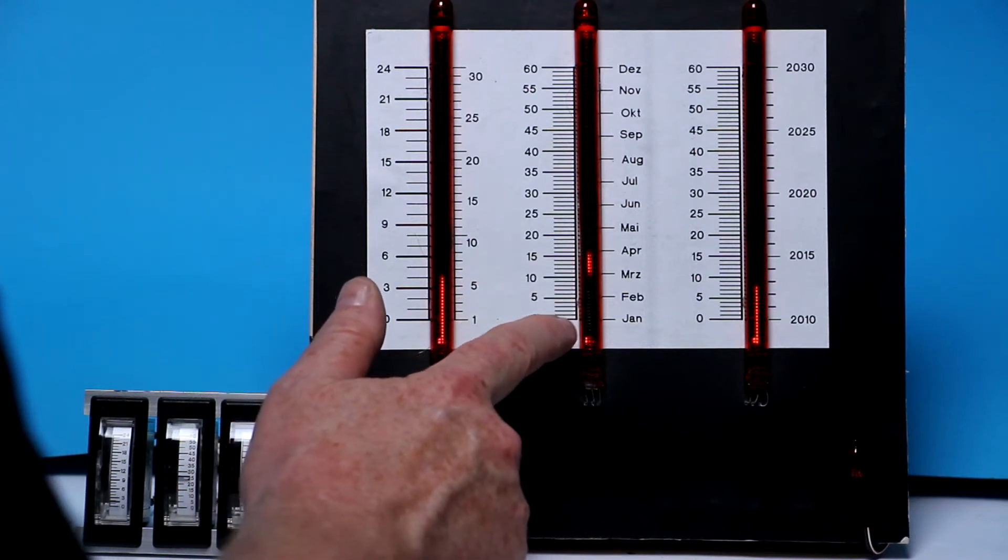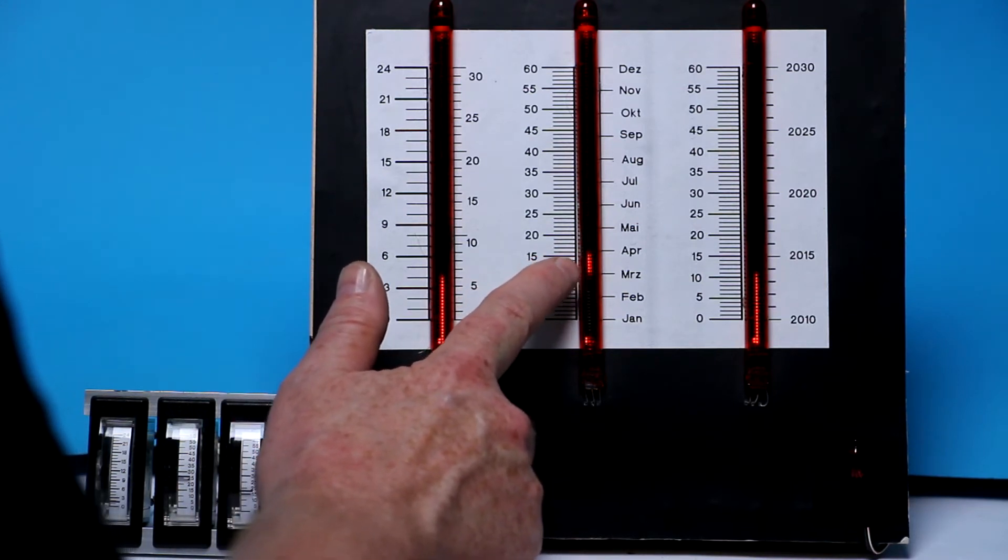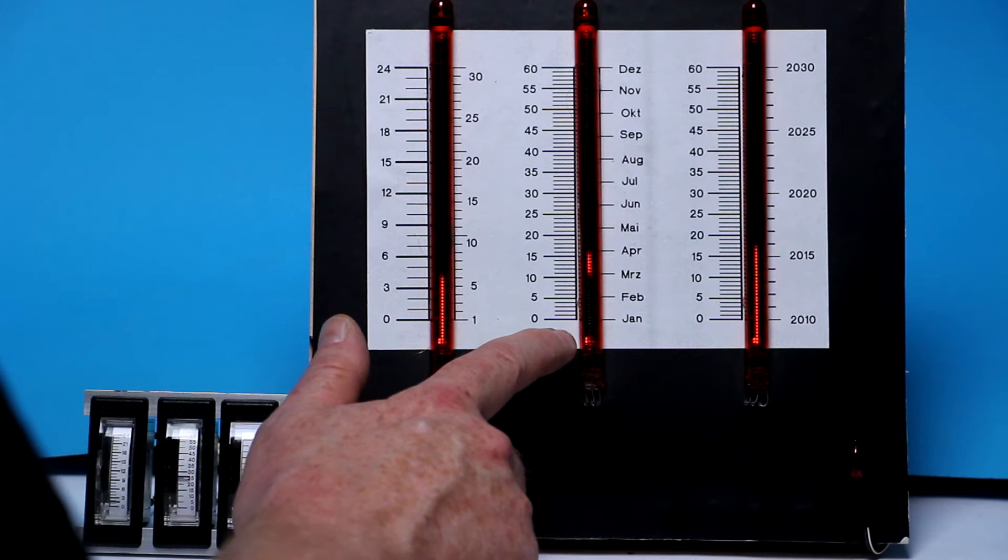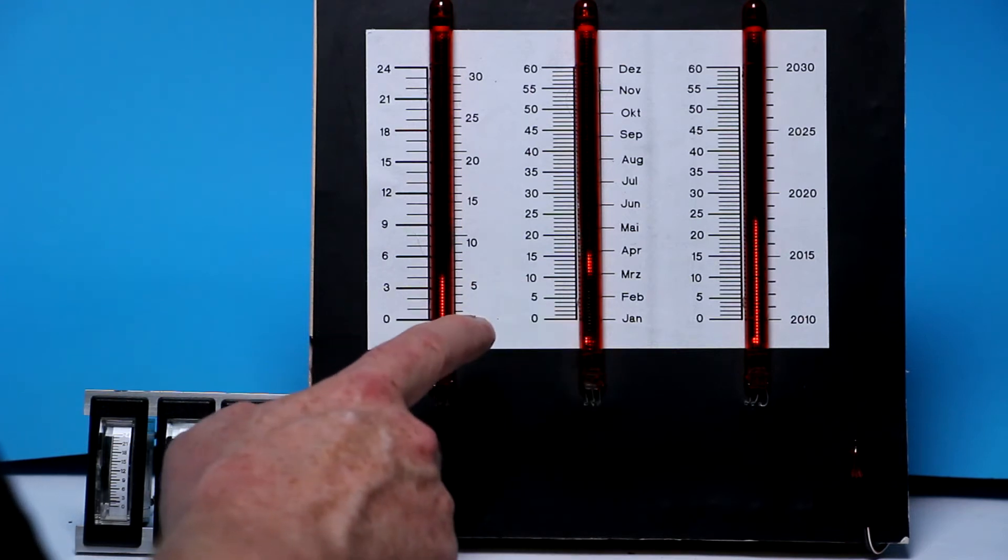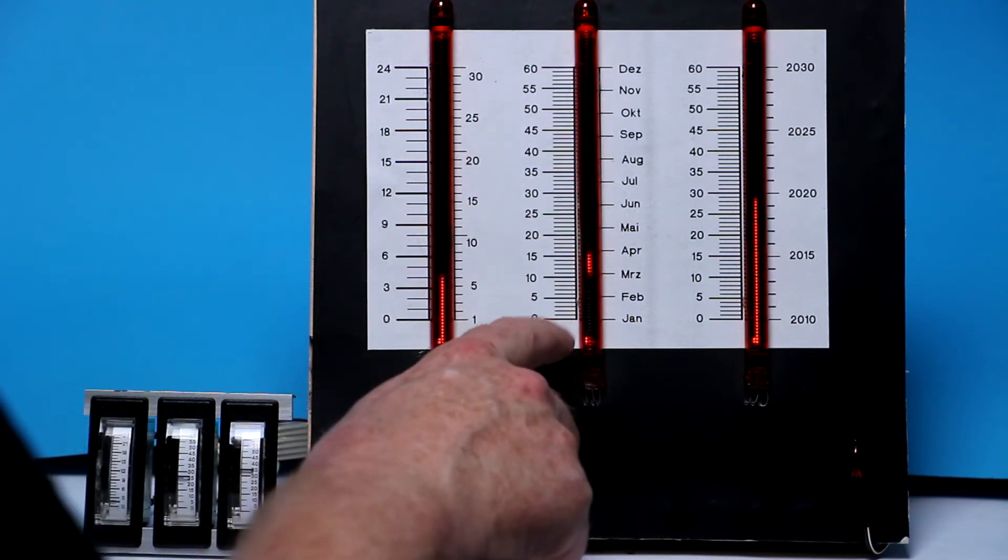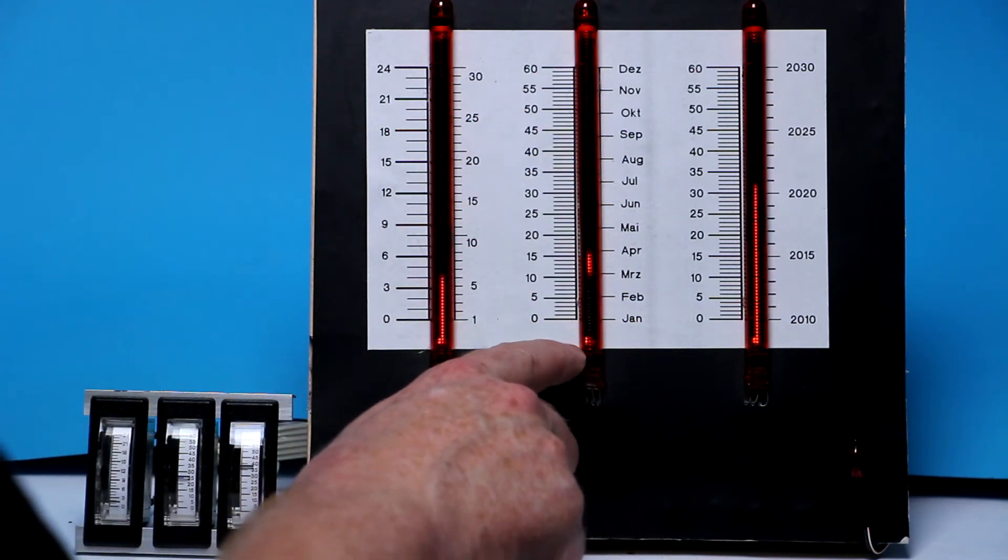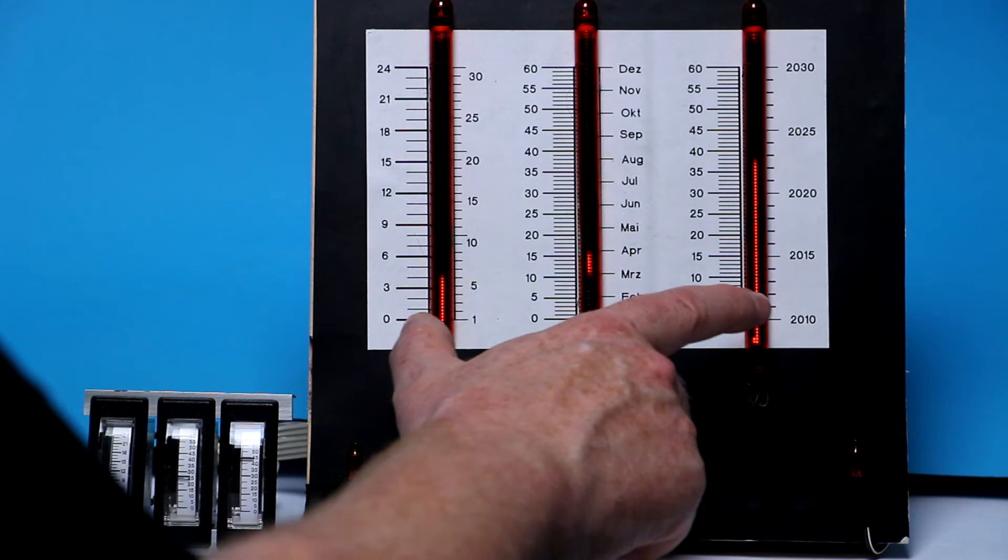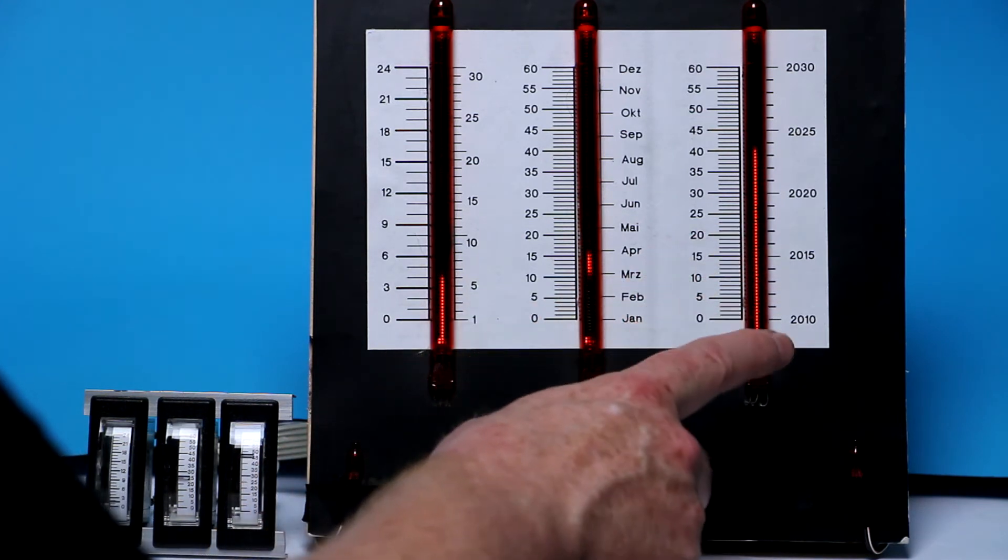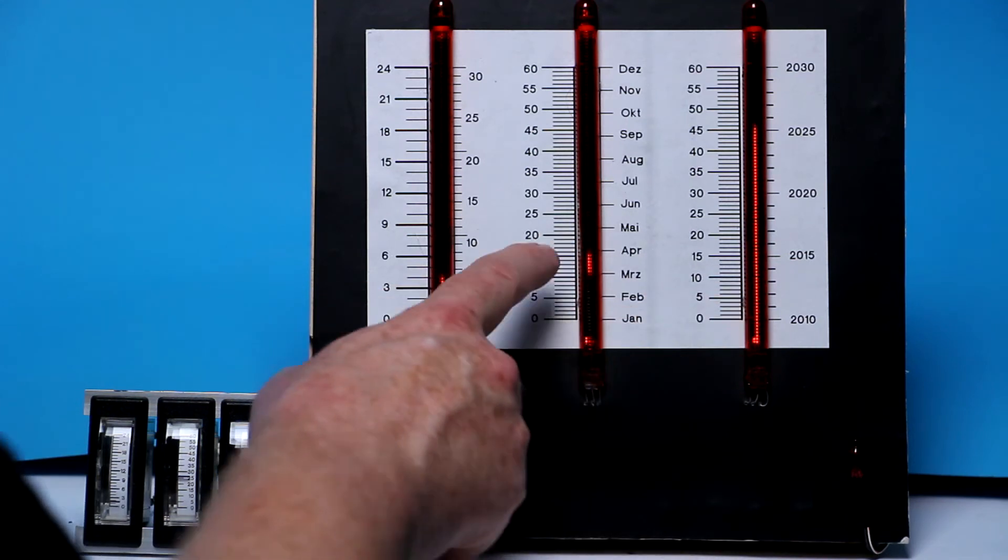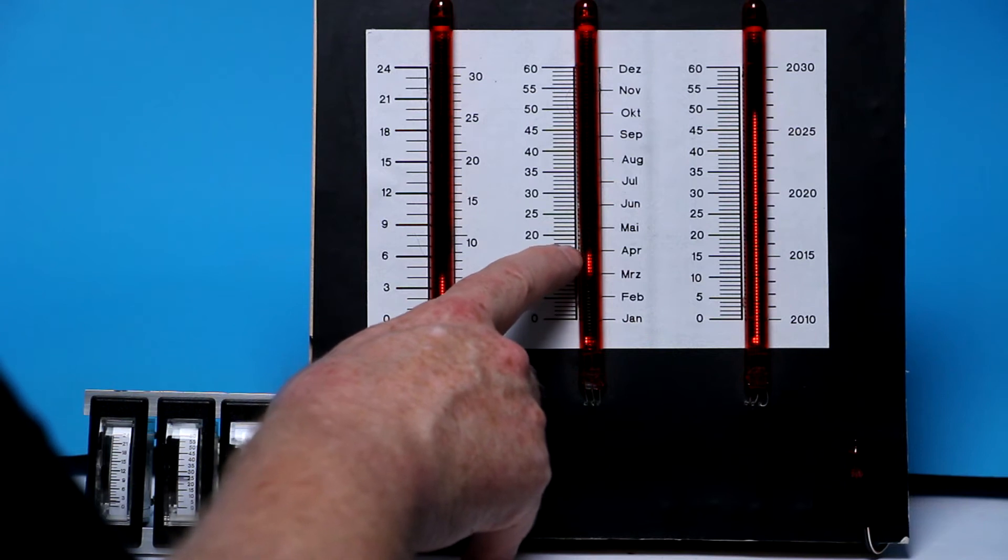And here you see the second problem. The string or thread sometimes becomes loose, and that's even explained in the data sheet for the IN13, that you may not change the rate of change of the current through the bar graph may not exceed a certain value. And you might have noticed, once a minute the display changes from time to date, and this change is a little bit too fast here. So the thread, or however you want to call it, becomes loose.